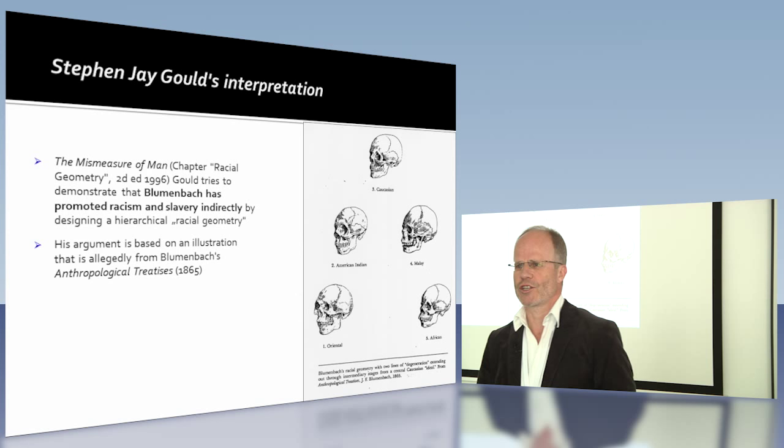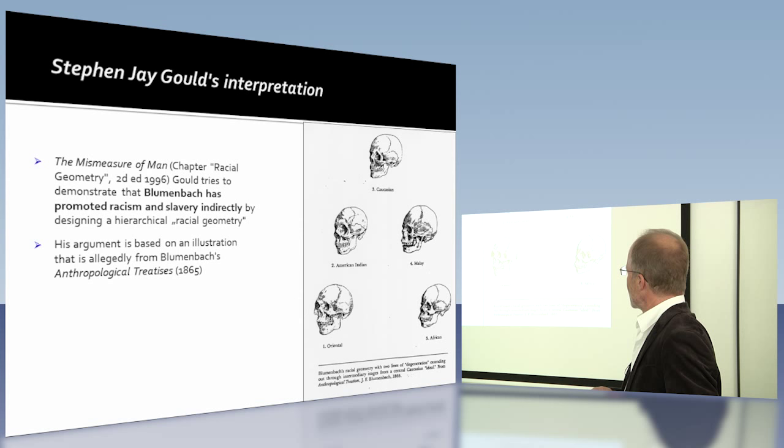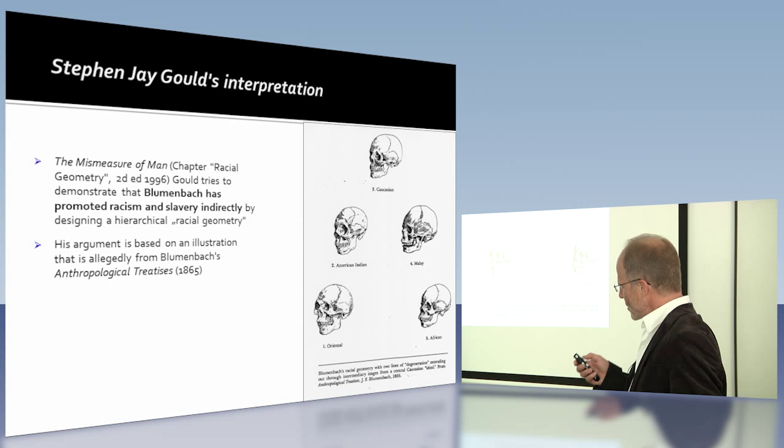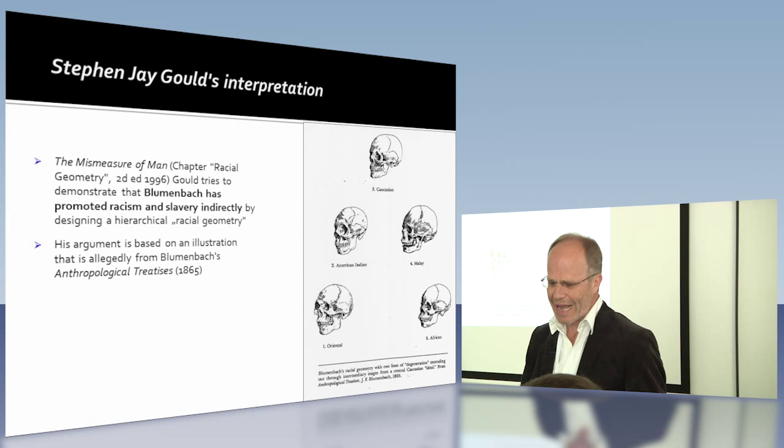I sent students to look for the illustration and they couldn't find it. So I wondered where this illustration came from. And it turned out that Blumenbach — or the publisher as he claimed later — fabricated it. It's actually easily seen because the type of letters are the same. So it's very obvious.